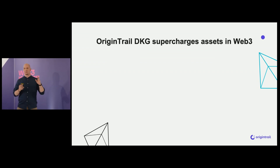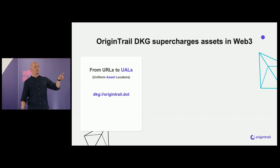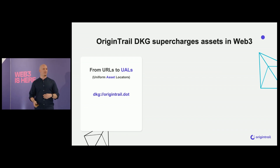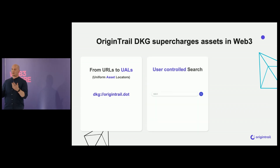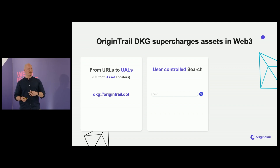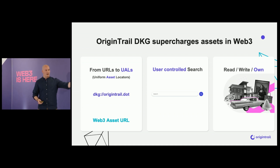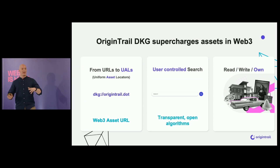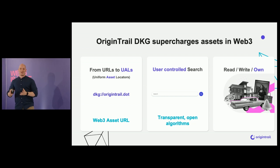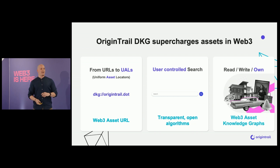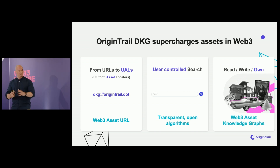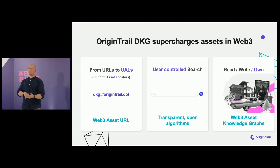So what does OriginTrail do? We move from URLs to UALs — Uniform Asset Locators — a primitive in the knowledge graph, like a URL for Web3 for any asset. User-controlled search, or really any type of query — search is just the easy one to understand. This read-write-own ability uses blockchains and knowledge graphs together to work with physical or digital assets. We have a transparent, open set of algorithms for search and querying — think of your social media feed not being controlled by an algorithm skewing your perception in some political direction. And you have Web3 asset knowledge graphs where your asset, which you own, can be updated, edited, and sold.